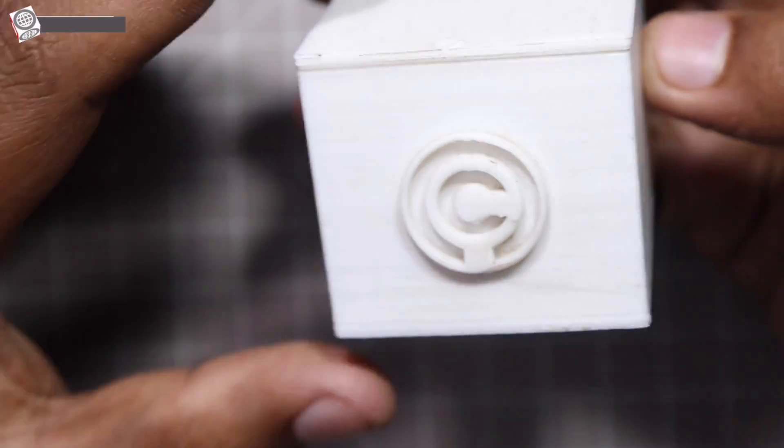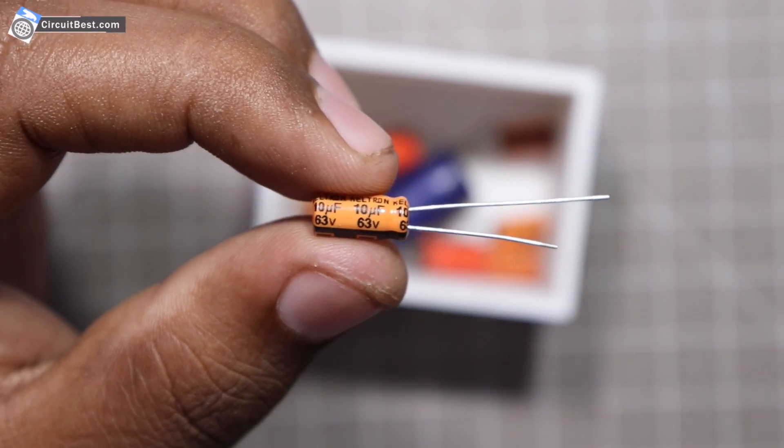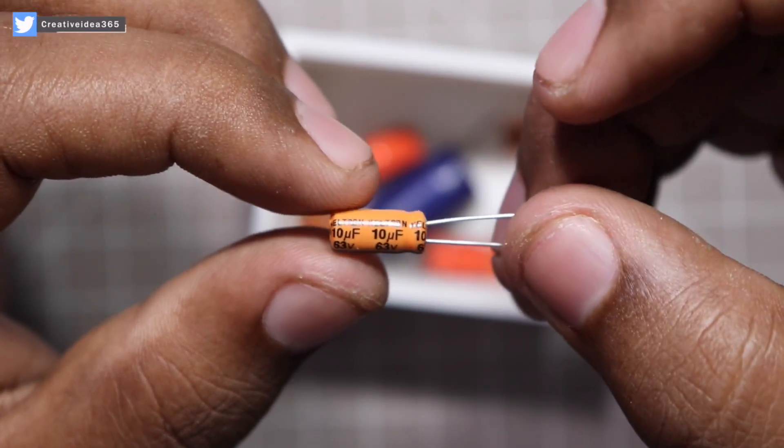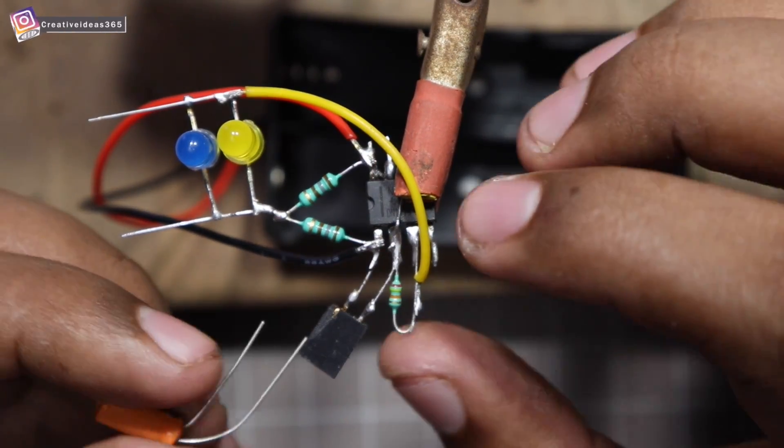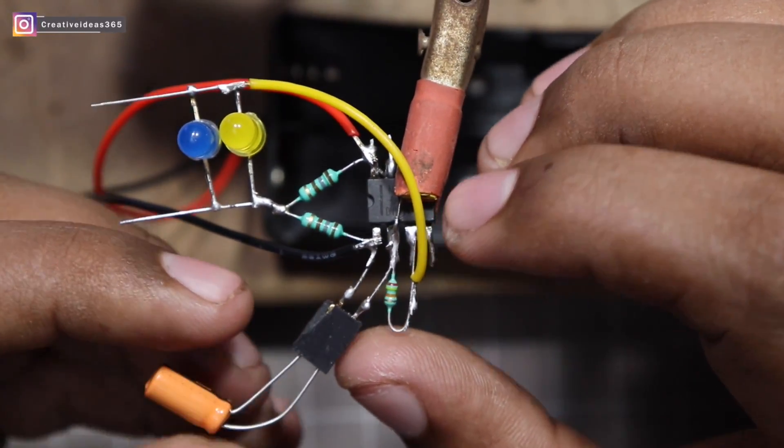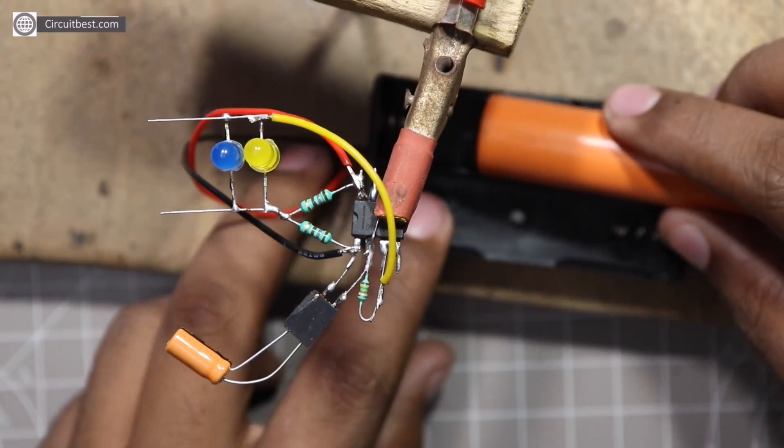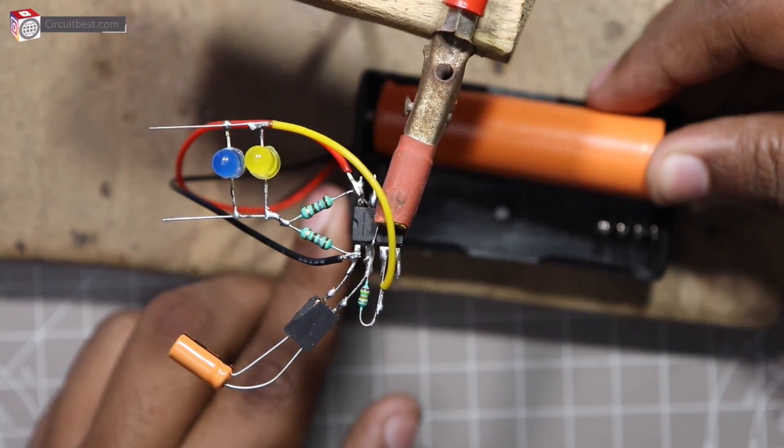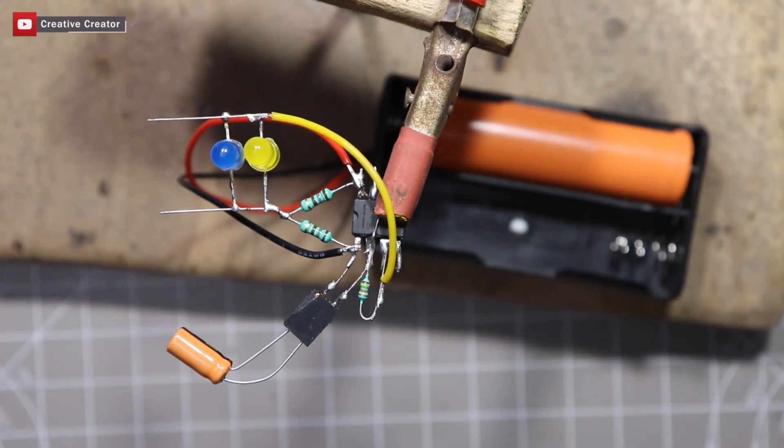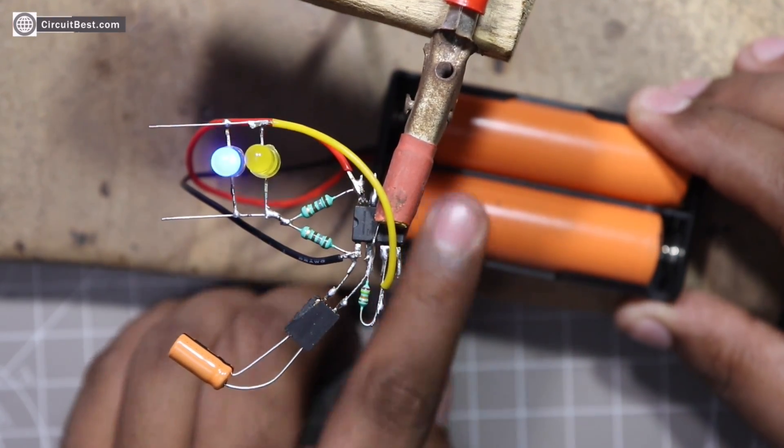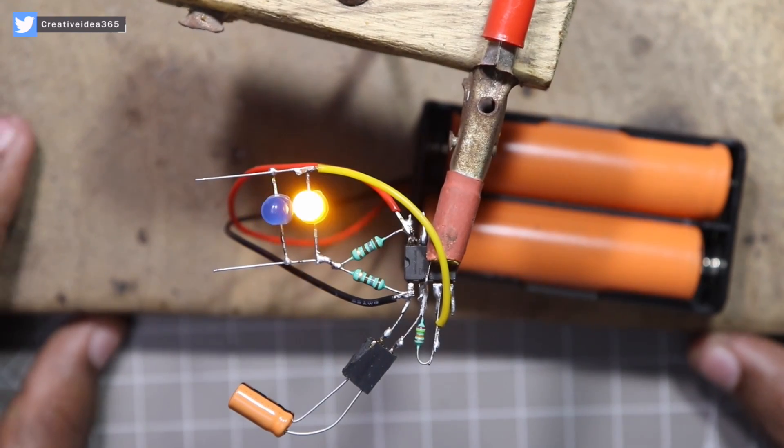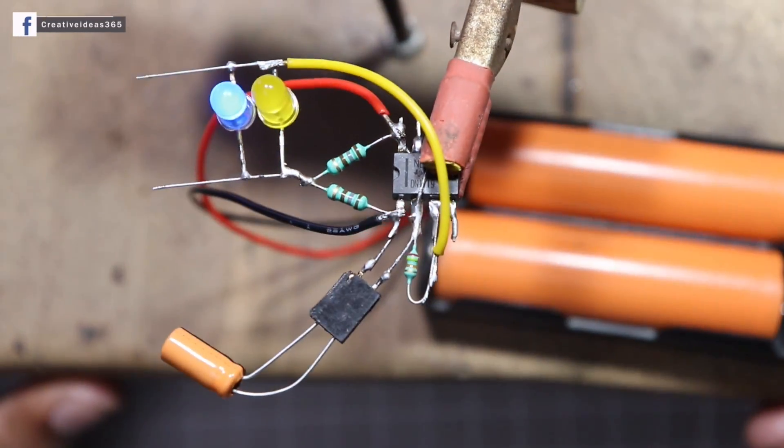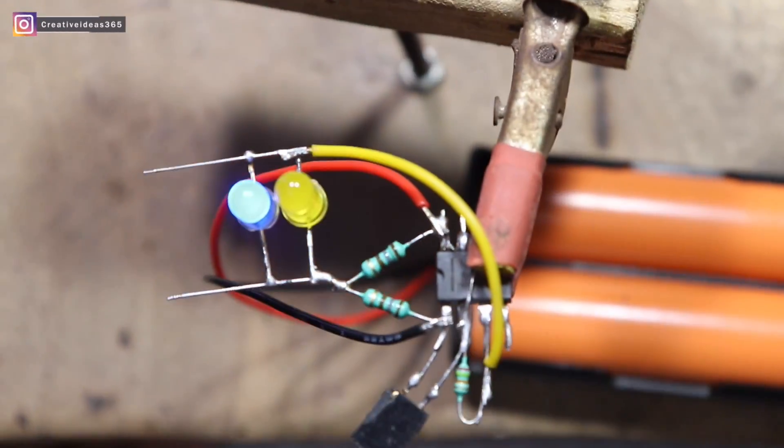Now we will need some capacitors for testing this circuit. The circuit is working perfectly. If you want to decrease the flashing speed, you can use any higher value capacitor and it will work just fine.